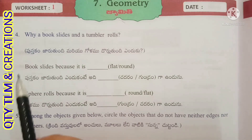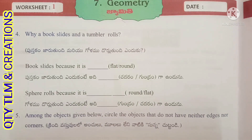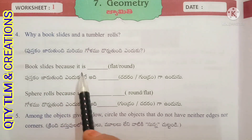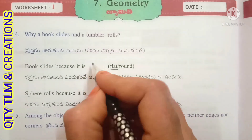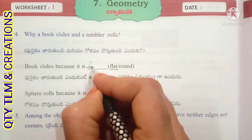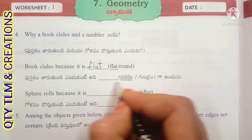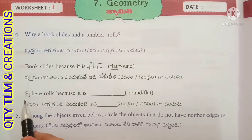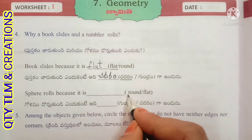Next question: why does a book slide and a tumbler roll? Book slides because it is flat. A sphere rolls because it is round.